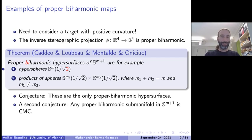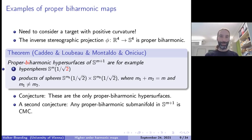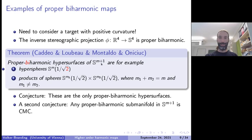Now let us come to the other direction: when do we have proper biharmonic maps? If you have non-positive curvature this will most probably not be the case, but if you have positive curvature you can have proper biharmonic maps. One famous example is the inverse stereographic projection from flat Euclidean four-space to the four-dimensional Euclidean sphere, which one can check by an explicit calculation. Another large class of examples was first found by Cadeo, Lobo, Montaldo, and Oniciuc in a series of papers.